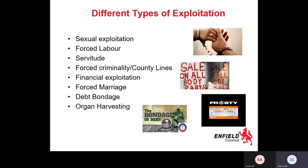The rarest type of exploitation is organ harvesting, but it does still happen around the world. People are trafficked for their internal organs — usually the kidney or liver — to be harvested for transplant and sold on the black market. A medical professional would need to be involved to remove and store the organs correctly, and that person could be corrupt or themselves being exploited.